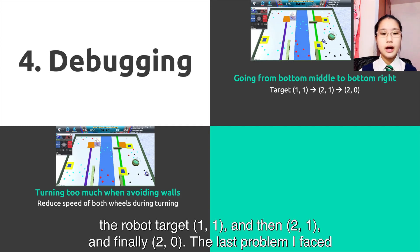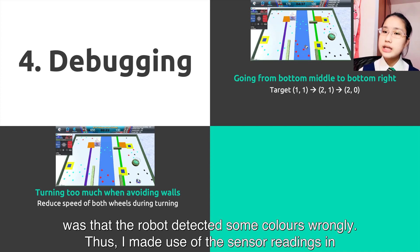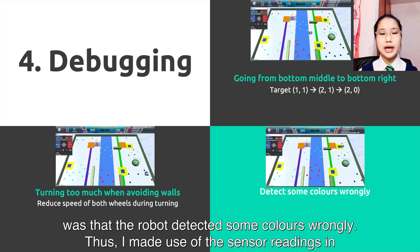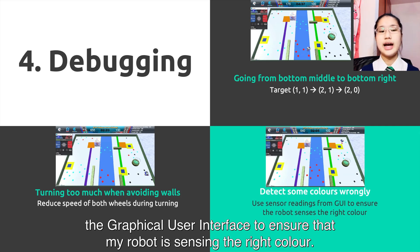I solved this by making the robot target 1-1, then 2-1, and finally 2-0. The last problem I faced was that the robot detected some colors wrongly. Thus, I made use of the sensor readings in the graphical user interface to ensure that my robot is sensing the right color.